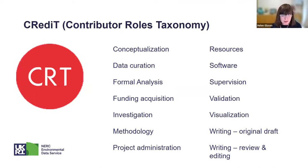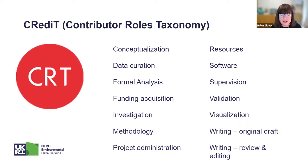Citation count, h-index, and journal impact factors are still used to assess research contribution by many. Publishing in academic journals remains the principal way to communicate scientific findings, and authorship on manuscripts is still seen as an indicator of an individual researcher's contribution through the list of authors on peer-reviewed papers. For that reason, the list of authors on many peer-reviewed papers continues to grow.